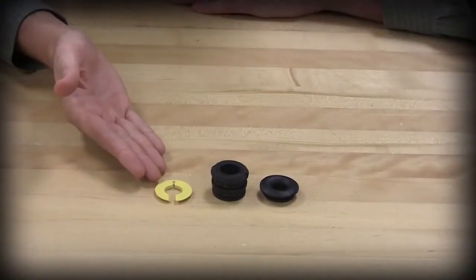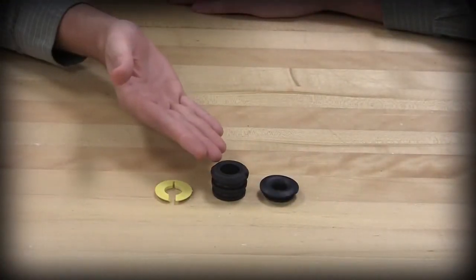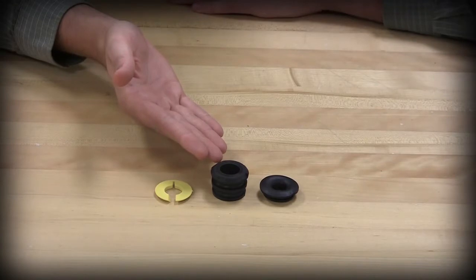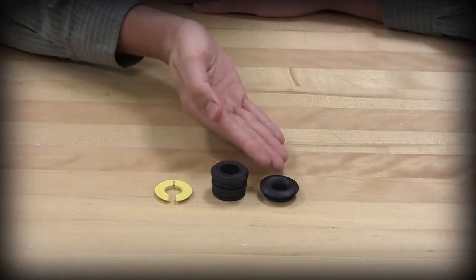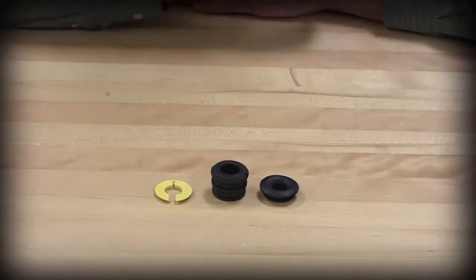The gotcha ring provides strain relief. The rubber bushing also provides strain relief and some sealing around the cable. And the cone seal prevents water and debris from entering the back of the device.